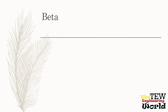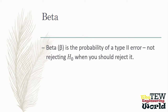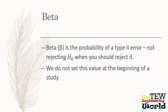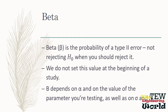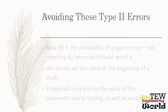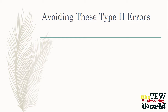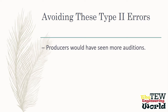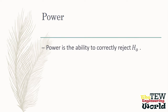Beta is the probability of a Type 2 error — not rejecting a null hypothesis when you should reject it. We don't set this value at the beginning of a study. Beta depends on alpha, on the values of the parameter you are testing, the population standard deviation, and sample size. How could those Type 2 errors have been avoided? If the coach had seen more of that basketball player, if the producers had seen more auditions, if we tossed the coin many more times — more data equals more information equals more knowledge, and knowledge is power. In statistics, power is the ability to correctly reject a null hypothesis. Power equals 1 minus beta.